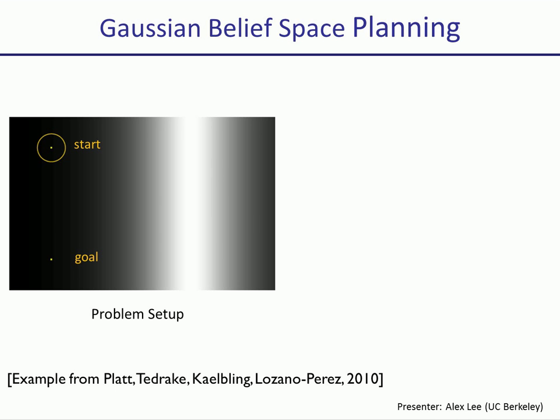With the lighter region being the region with smaller noise than the darker region. For this task, what will a state-space planner do? A state-space planner will go directly from start to goal, ignoring any sensor measurements. Notice that under this plan, the robot reaches the goal with a larger uncertainty than the one it started with.